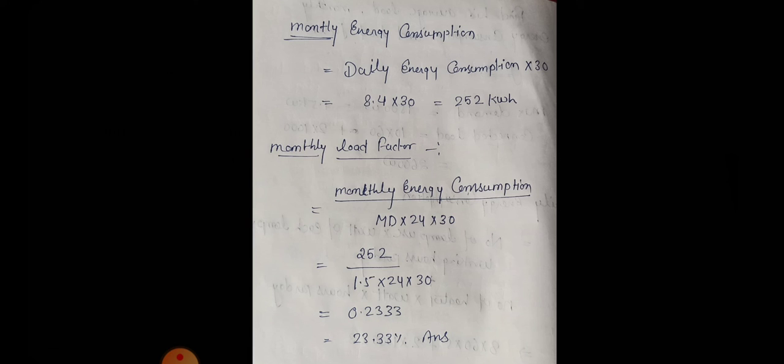monthly energy consumption is the daily energy consumption into 30. If we are considering for a whole year, it would be 365. So it's all about the days. 8.4 into 30 equals 252 kilowatt hours.